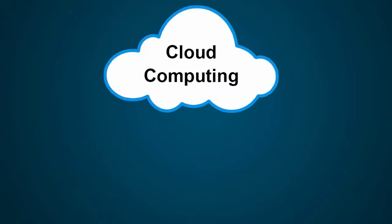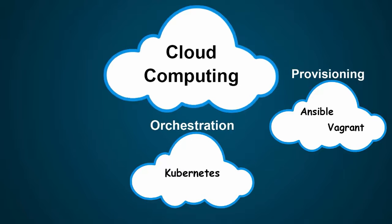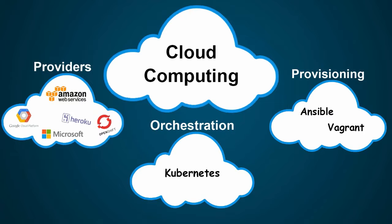We will look at two core provisioning tools: Ansible and Vagrant. The orchestration tool we will look at is Google's Kubernetes. The cloud providers we will work with are Amazon Web Services, Google Cloud Platform, Microsoft Azure, Heroku, and Red Hat's OpenShift.